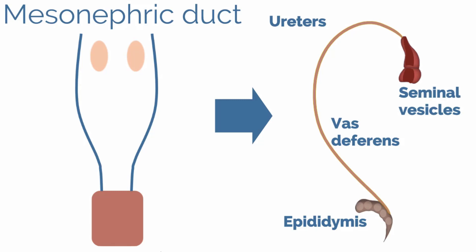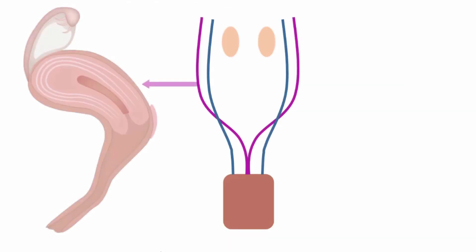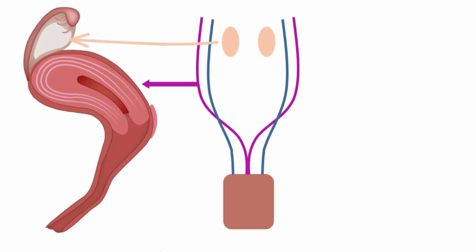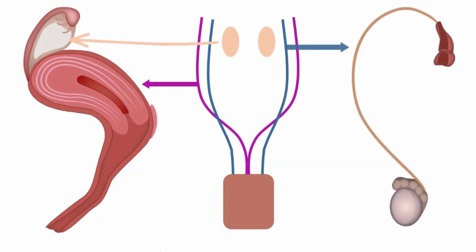Looking at them side by side: the Müllerian duct structures are shown on the left, and the ovary comes from the genital ridge as an undifferentiated gonad. The Wolffian duct structures are seen on the right, as well as the testes, which again originate from the genital ridge.